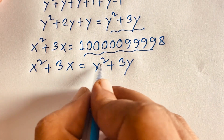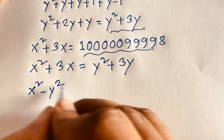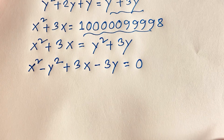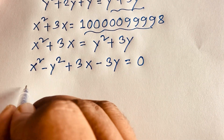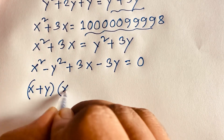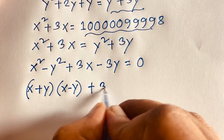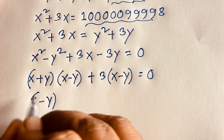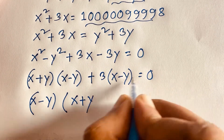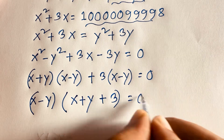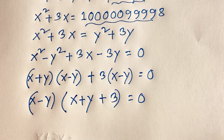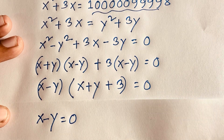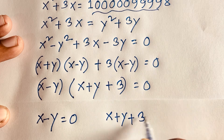Now at this moment, if I move y squared to this side: x squared minus y squared plus 3x minus 3y equals 0. We know that a squared minus b squared equals (a plus b)(a minus b), and here 3 is common. So it factors as (x minus y)(x plus y plus 3) equals 0.